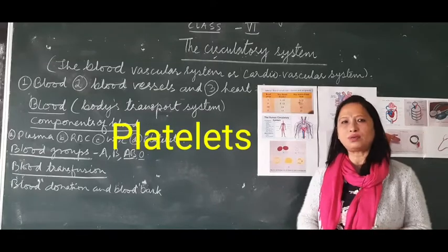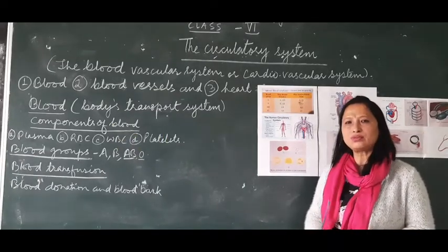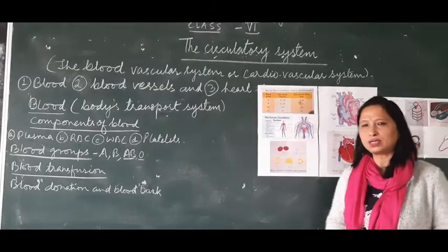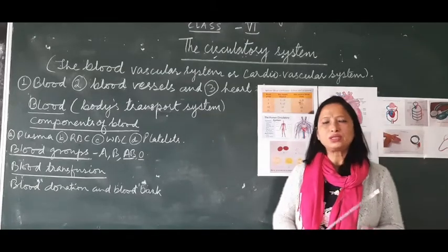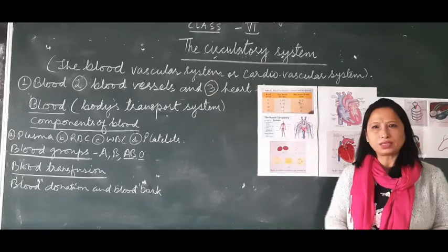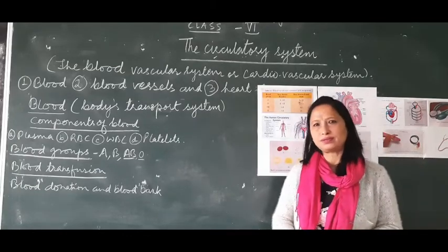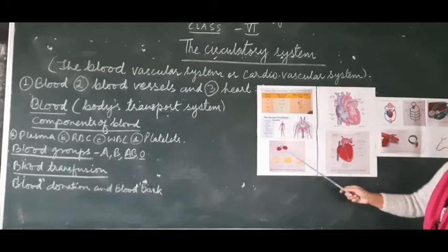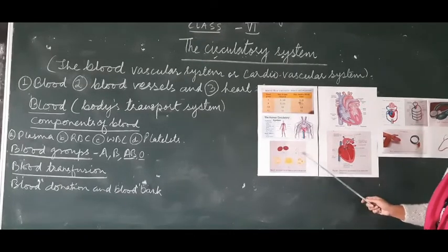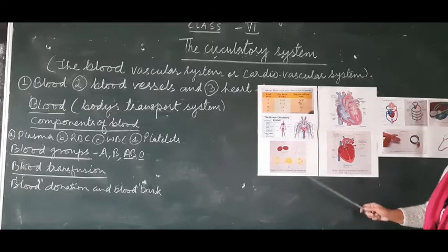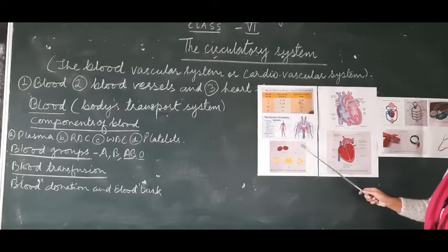Platelets are minute — they are very small — and are formed within our bones. The function of platelets is to help in clotting of blood, which blocks the flow of blood from damaged blood vessels. Looking at this picture: this is RBC, this is WBC, and this is platelets. WBC is larger than RBC, and platelets are very minute.